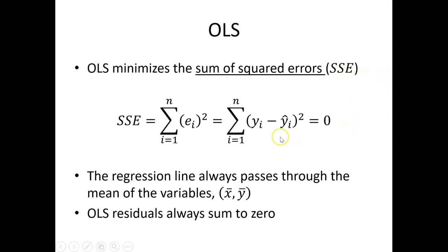The error term, as we defined before, is equal to the actual value of the dependent variable minus the predicted value, squared, and you add those up for all of the data points. Another expression is that it's the squared error term added up over all the data points.